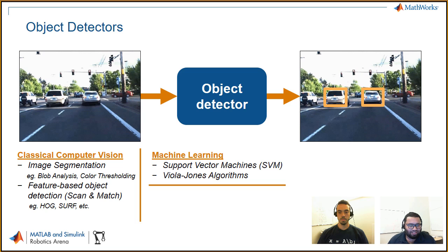Machine learning object detectors employ classification techniques like support vector machines. You still use classical computer vision to detect features, then feed those features into your machine learning model to classify whether it's a car, a pedestrian, a stop sign, and so on. MATLAB also has algorithms for cascade object detectors, which are implementations of the Viola-Jones algorithm.